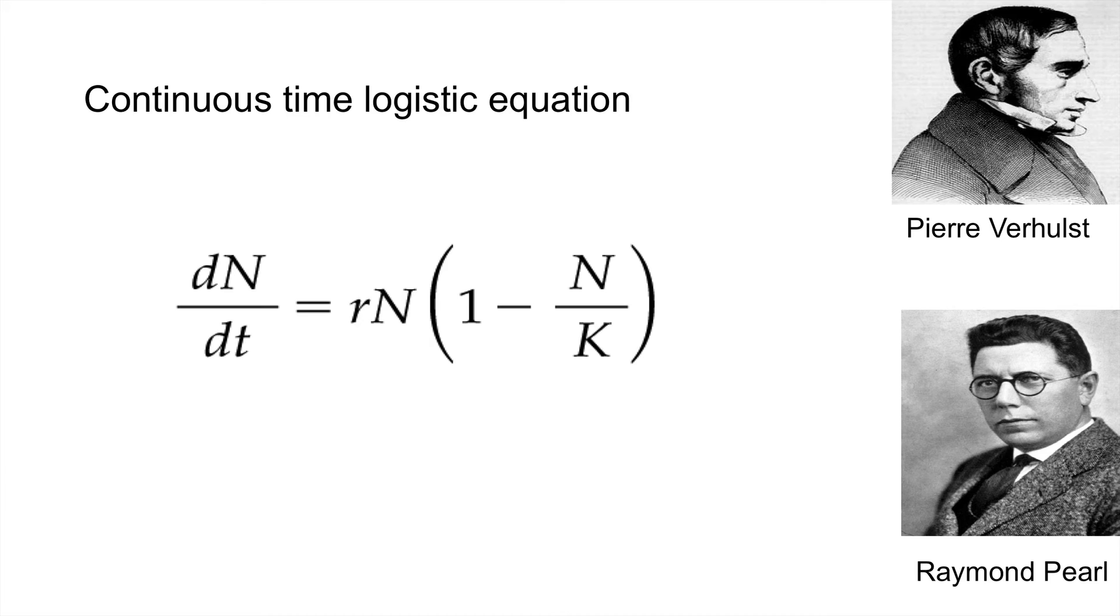Now, here is a more sophisticated continuous time model for the rate of change of a population size over time. Where here we have the component rN, that's the geometric increase.